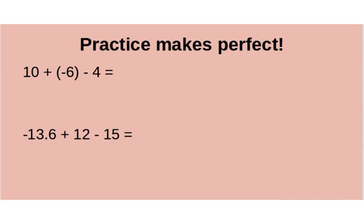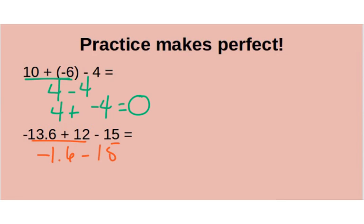These are a bit more tricky, but practice makes perfect. Let's do the first multi-step problem: 10 plus negative 6 — different signs, so subtract to get 4. Now we have 4 minus 4; change to addition: 4 plus negative 4 equals 0. Next: negative 13.6 plus 12 gives negative 1.6, then minus 15. Change to addition: negative 1.6 plus negative 15 — same signs, so add to get negative 16.6.